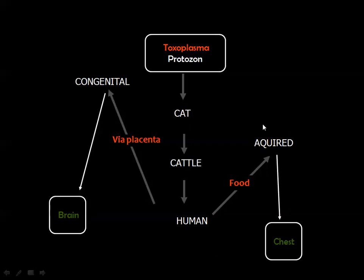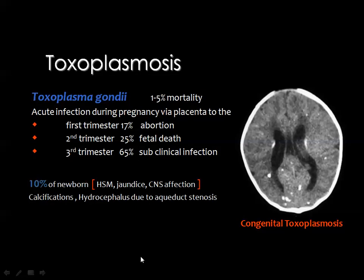Toxoplasma is a protozoon transmitted by cat to cattle, then to human beings. If transmitted by food, it results in acquired infection mainly affecting the chest, but if transmitted through the placenta, it results in congenital infection mainly affecting the brain. The infection may occur during the first, second, or third trimester. If late in pregnancy, it results in subclinical infection, and 10% of patients will have hepatosplenomegaly, jaundice, and CNS manifestations.